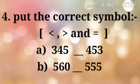Question number 4. Put the correct symbol. Number A. 345 is smaller than 453. Number B. 560 is greater than 555.